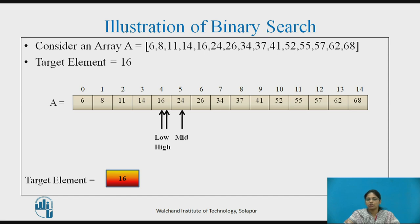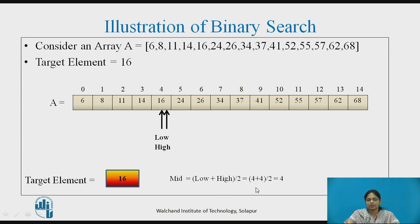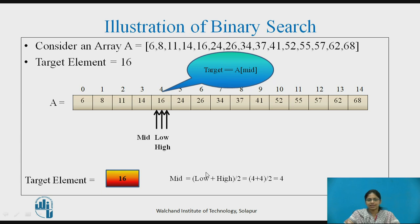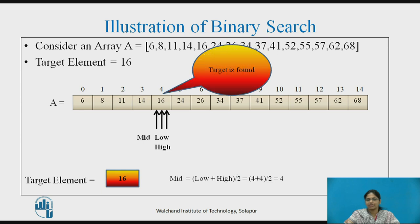Based on the new low and high values, we compute the new mid, but first we check that low is less than or equal to high — yes, it is. Mid is computed as 4. We compare A[mid] with the target element, and the target element is equal to A[mid]. The target is found at index 4 of the array.